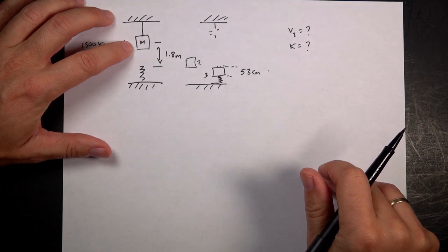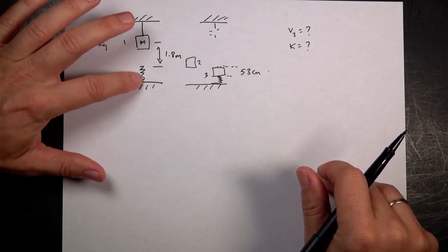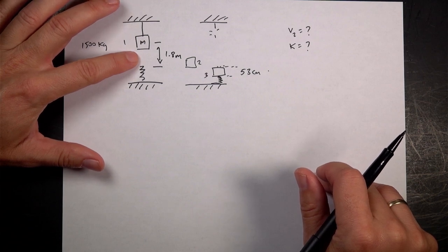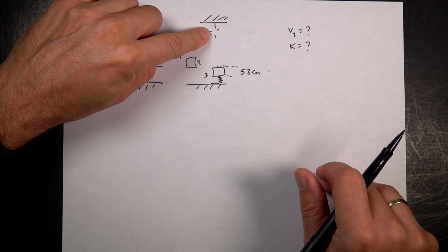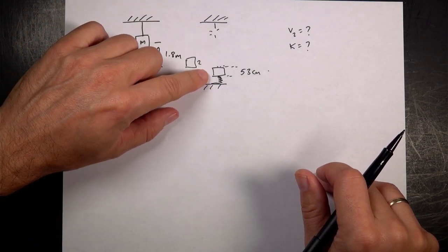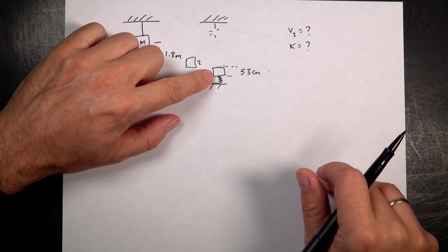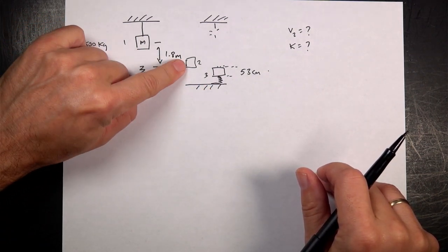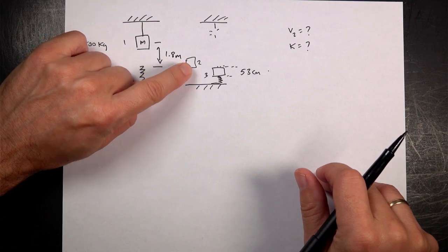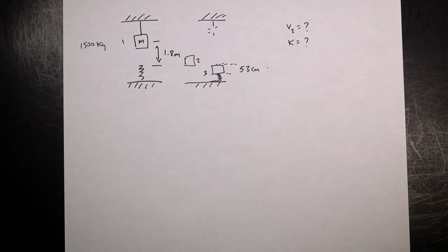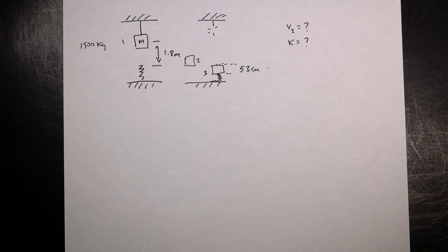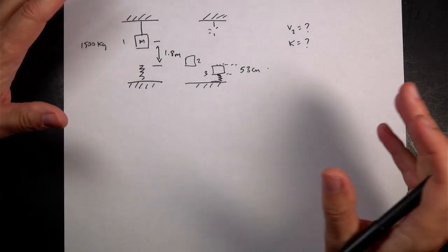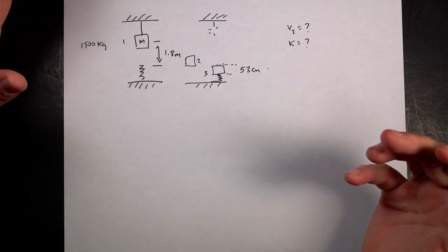It hangs from a strong rope 1.8 meters above a heavy-duty spring. So this distance right there is 1.8 meters. After the rope suddenly breaks, the crate hits the spring and compresses it 53 centimeters before coming to a stop. So what's the speed of the crate right before it hits the spring? And then what's the spring constant?